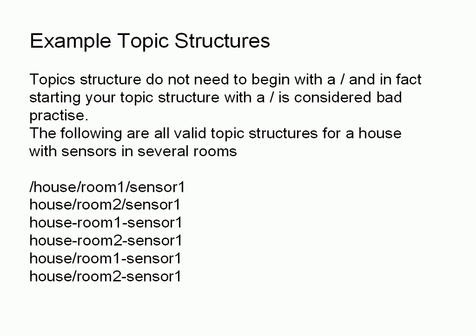Here are a few example topic structures. Many people start with a leading forward slash to designate the root, but that isn't necessary and is actually considered bad practice. For a house with sensors in several rooms, you could use a three-level structure starting with a forward slash, or the same format without the leading slash — which is the preferred format. You can also use a flat structure with no levels, or a two-level structure. All are valid; it's a design choice.